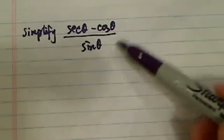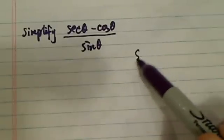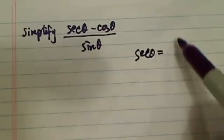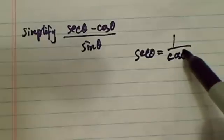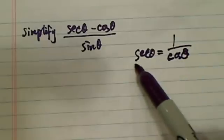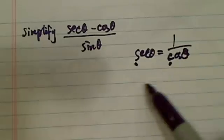To simplify this trig expression, you really need to know that secant theta is really 1 over cosine theta. There's a trick you can remember. If it starts with S, then it's 1 over C.